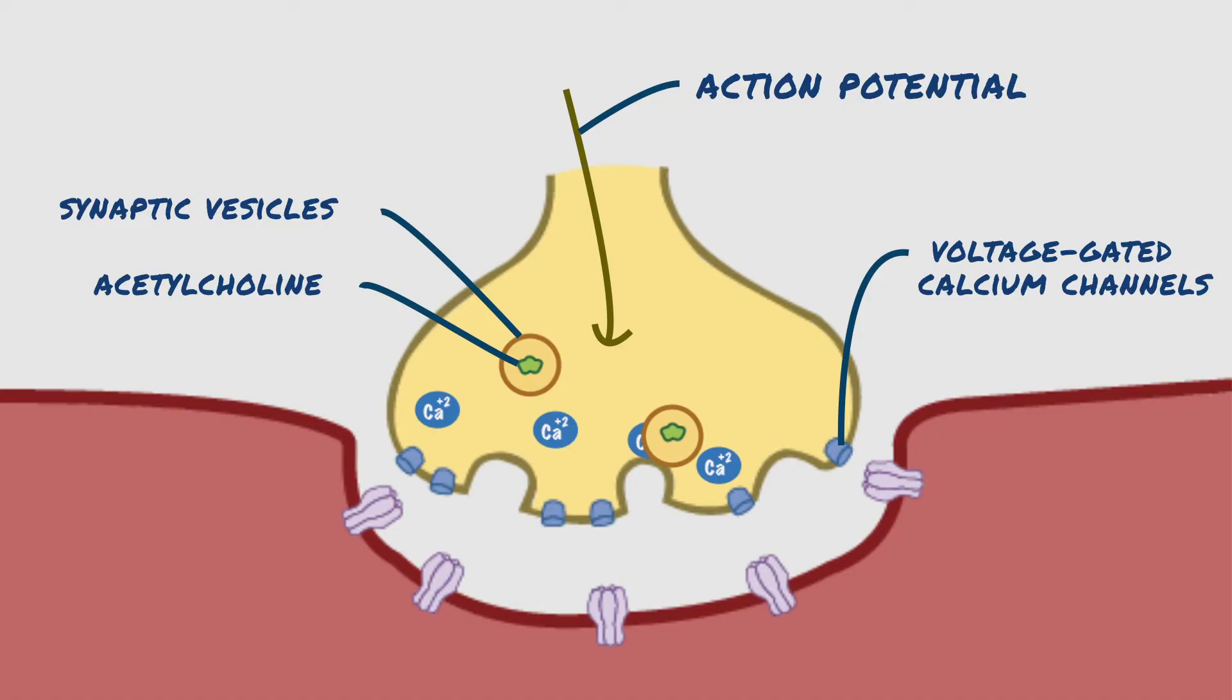And then, acetylcholines are released into the synaptic cleft by exocytosis. The released acetylcholines subsequently bind to nicotinic acetylcholine receptors on the motor end plate. The binding of acetylcholines to receptors triggers the opening of acetylcholine gated ion channels that allow the influx of sodium ions into the muscle.